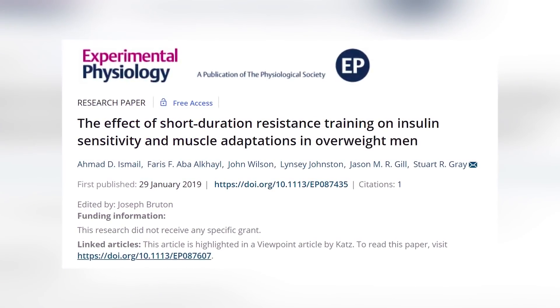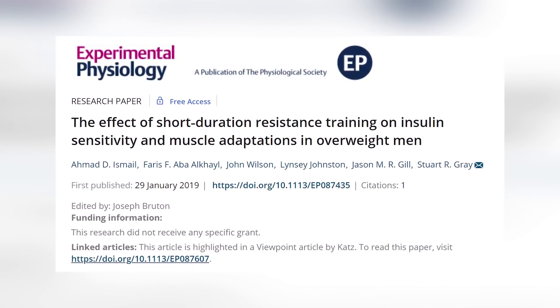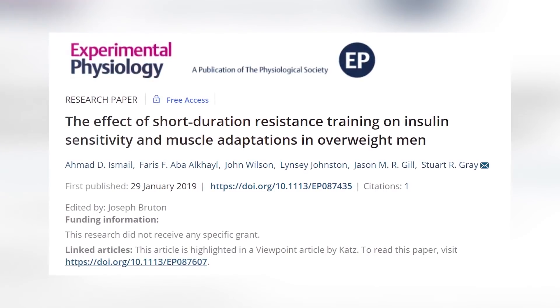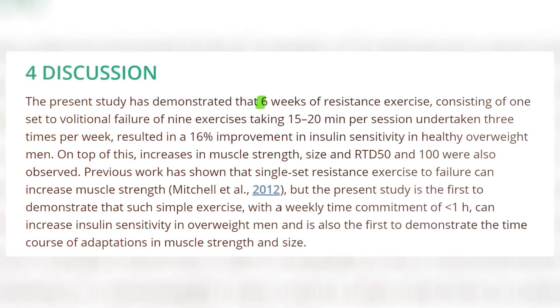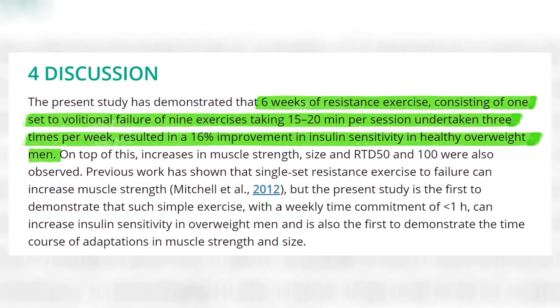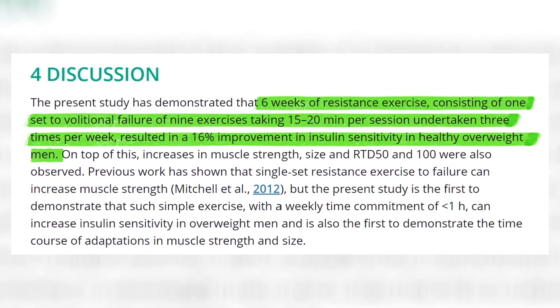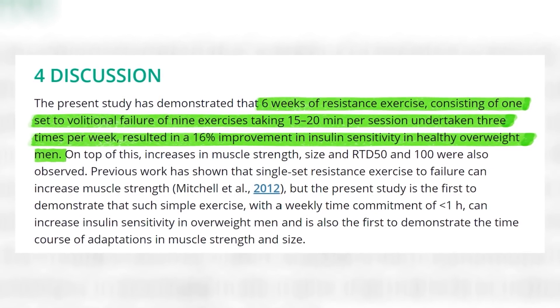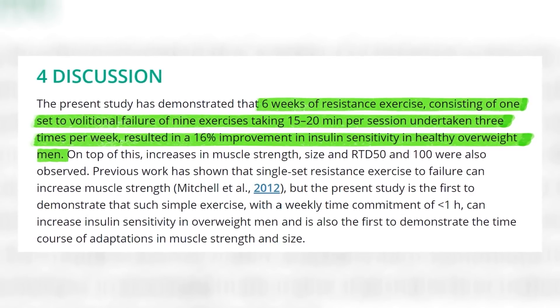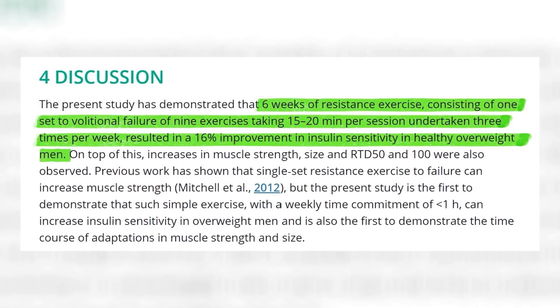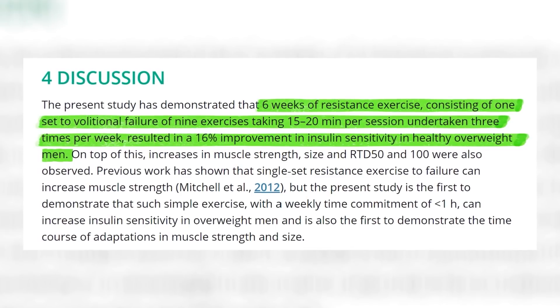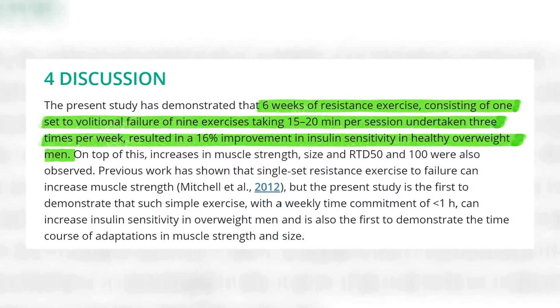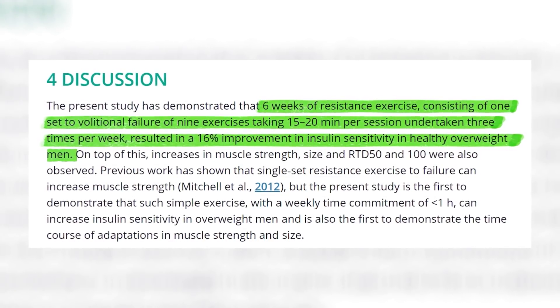A 2019 study looked at the effect short duration resistance training had on insulin sensitivity in overweight men. They did three resistance training sessions a week for six weeks, with each session lasting only 15 to 20 minutes. During the workout, they did one singular repetition of nine different exercises at 80% of their one rep max. After six weeks, participants saw an increase in their insulin sensitivity. These men did nine different exercises for one single rep and got results.